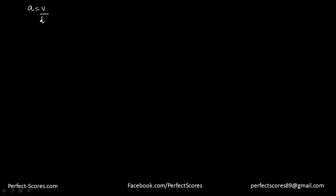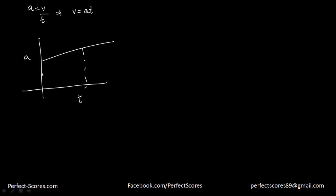Acceleration is equal to velocity over time, which means velocity is equal to acceleration times time. If you have a graph of acceleration and time, the area under that graph will actually give you the velocity. So the area under the acceleration and time graph will actually represent velocity.